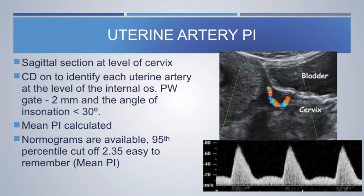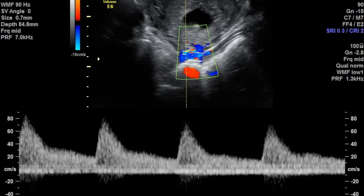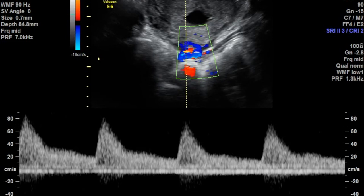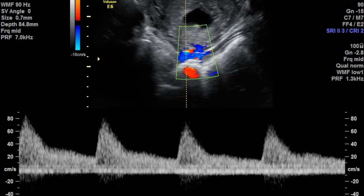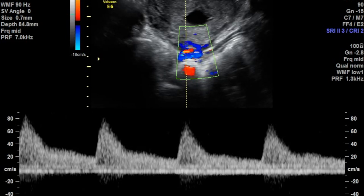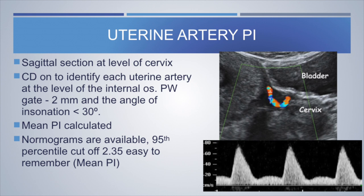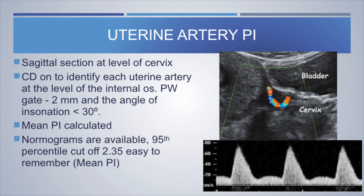Uterine artery evaluation should always be included at the 11 to 14 week scan for pre-eclampsia risk assessment. It is performed in the sagittal section at the level of the cervix with the internal os identified. Color Doppler identifies each uterine artery with slight probe tilting to each side. The PW gate is fixed at 2 mm and the angle of insonation should be less than 30 degrees. Both right and left uterine arteries are insonated and the mean PI is calculated — the 95th percentile cutoff of 2.35 is important to remember.